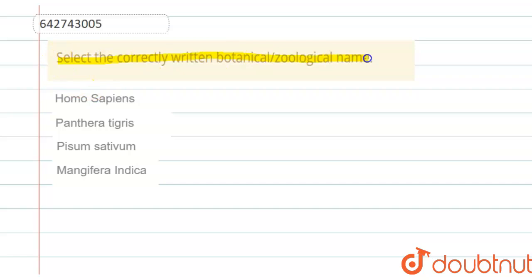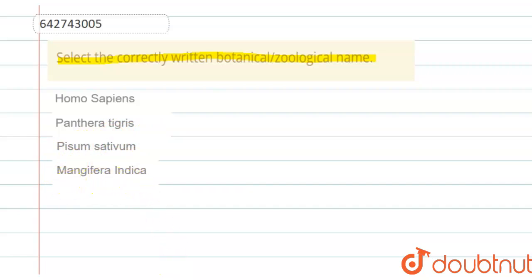The question is: select the correctly written botanical and zoological name. The first option is Homo sapiens, formerly known as humans. Second is Panthera tigris, that is leopard. Third is Spesum cytochum, that is a pea plant. And the fourth one is Mangifera indica, that is mango.